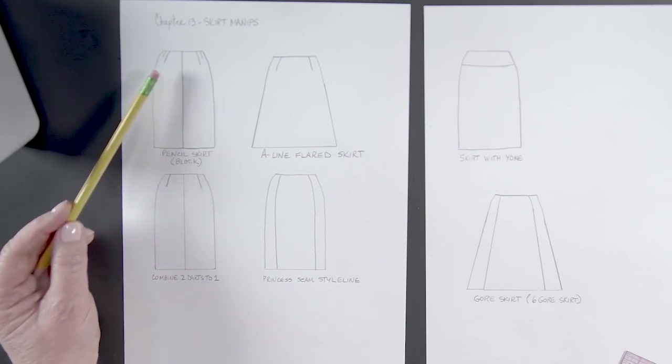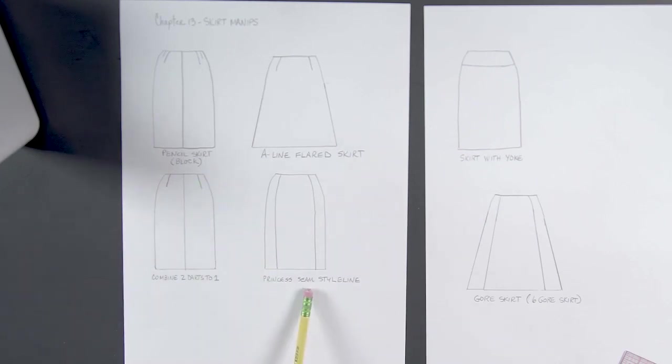Then we have a princess seam style line here where we've taken this dart here, where we've combined two darts into one, and then we just draw the line down and split the piece.